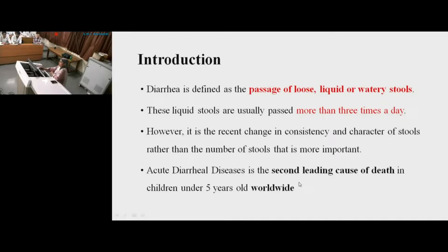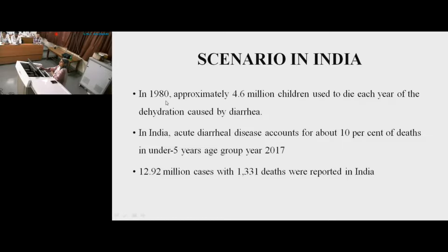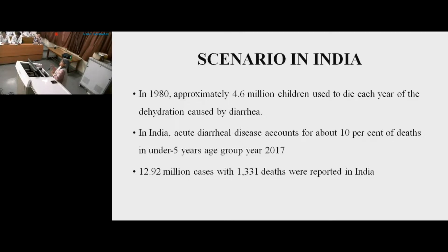Worldwide, acute diarrheal disease is the second leading cause of death in children under 5 years of age. In India, in 1980, approximately 6.4 million used to die each year because of dehydration from diarrhea. Now, because of the diarrheal disease control program, availability of ORS, and fluid therapy, mortality has been remarkably decreased, although there is not much change in the incidence.